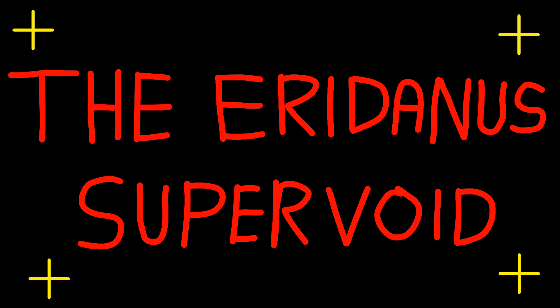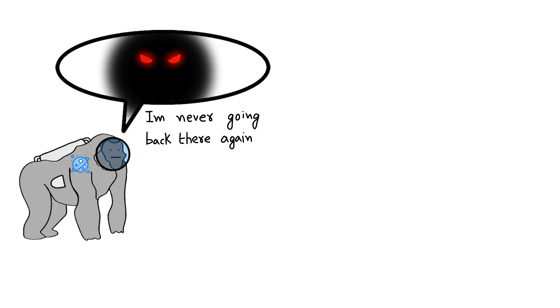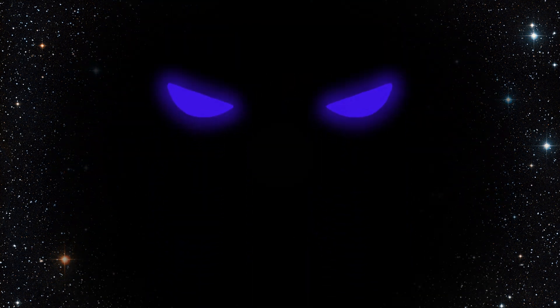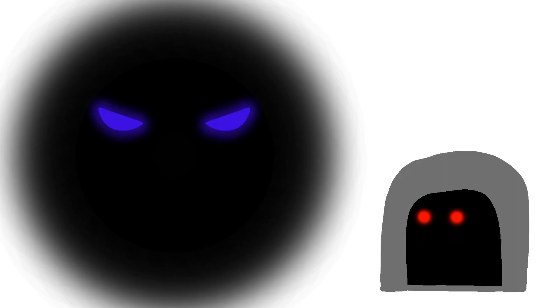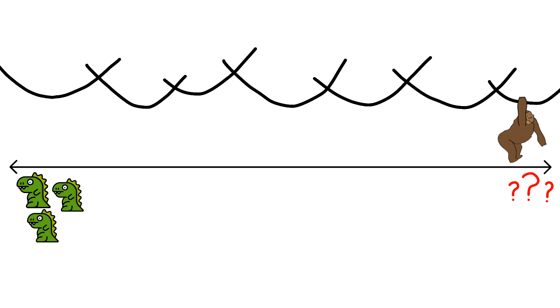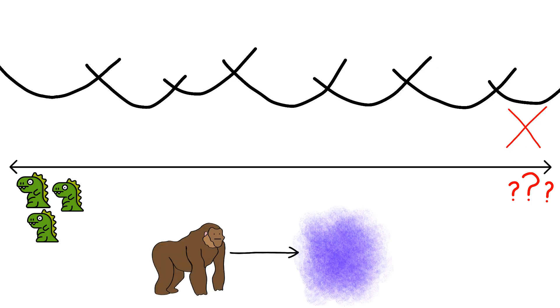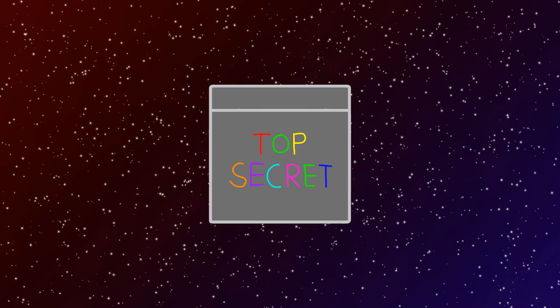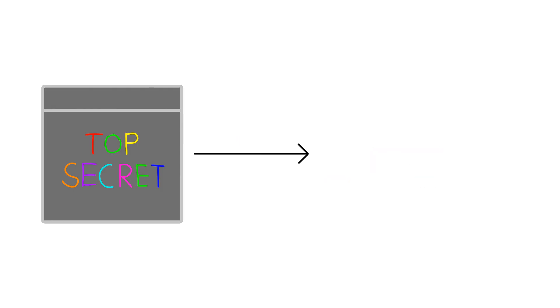But monkey thought Boötes Void was scary? Monkey was wrong. There's something even more terrifying lurking in the cosmos: Eridanus Supervoid. This cosmic nightmare makes Boötes Void look like a cozy monkey cave. Picture a void so massive that light takes one billion years to cross it. That's like monkey starting to swing from one end when dinosaurs were babies and finally reaching the other side never, because monkey would be cosmic dust long before getting there. Located 1.3 billion light years away, this supervoid is the universe's ultimate mystery box. But instead of containing prizes, it contains absolutely nothing and somehow makes the entire universe colder just by existing.